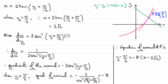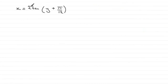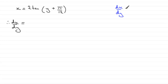I said I would run through at the end of the video how I differentiated 2 tan of (y plus π/12) by the chain rule. So here it is. If we've got x equals 2 tan of (y plus π/12) and we've got to find dx/dy, then by the chain rule dx/dy equals dx/dt times dt/dy, where I'm going to use dt as the intermediate variable.